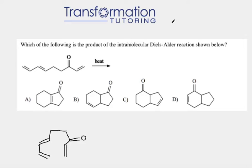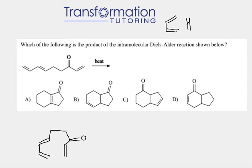What is a diene and dienophile? These are the two reactants of the Diels-Alder reaction. We must have a diene, which is a double-single-double bond, and we must have a dienophile, which is a double bond or triple bond. They react together in such a way as to form cyclohexene.